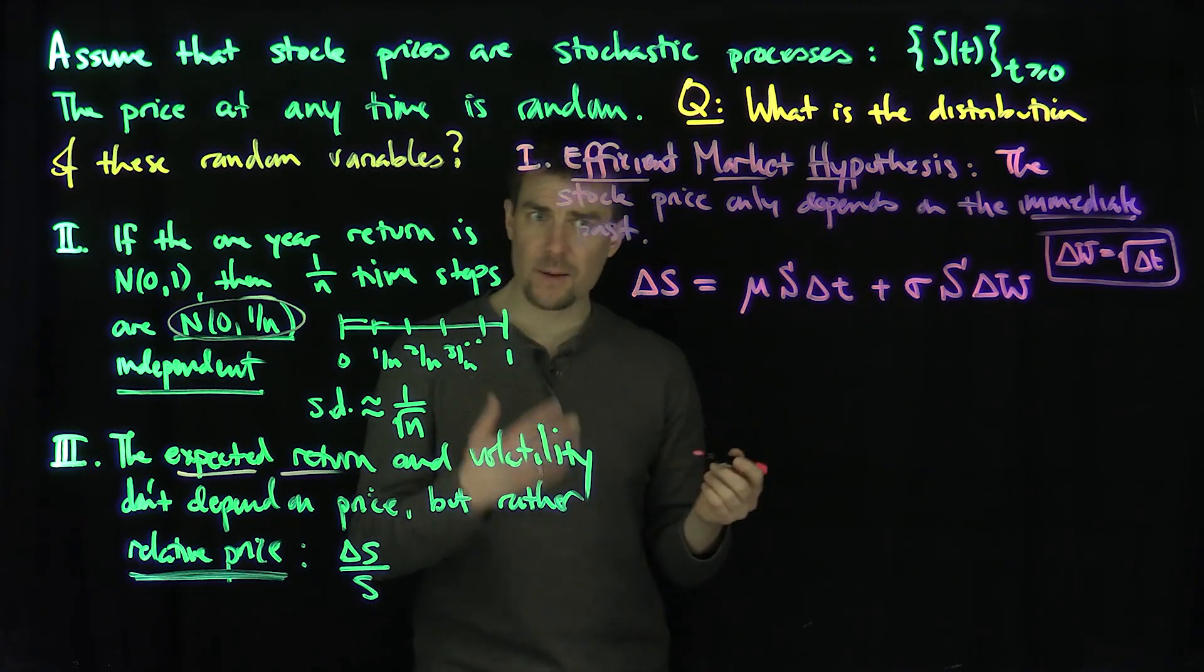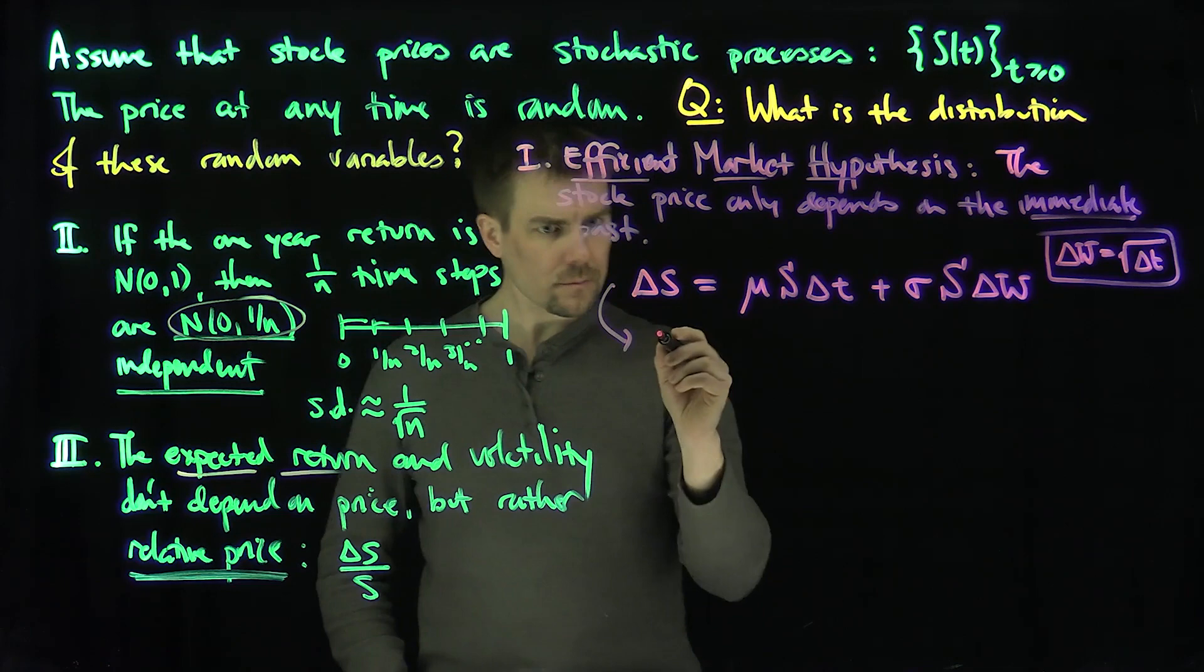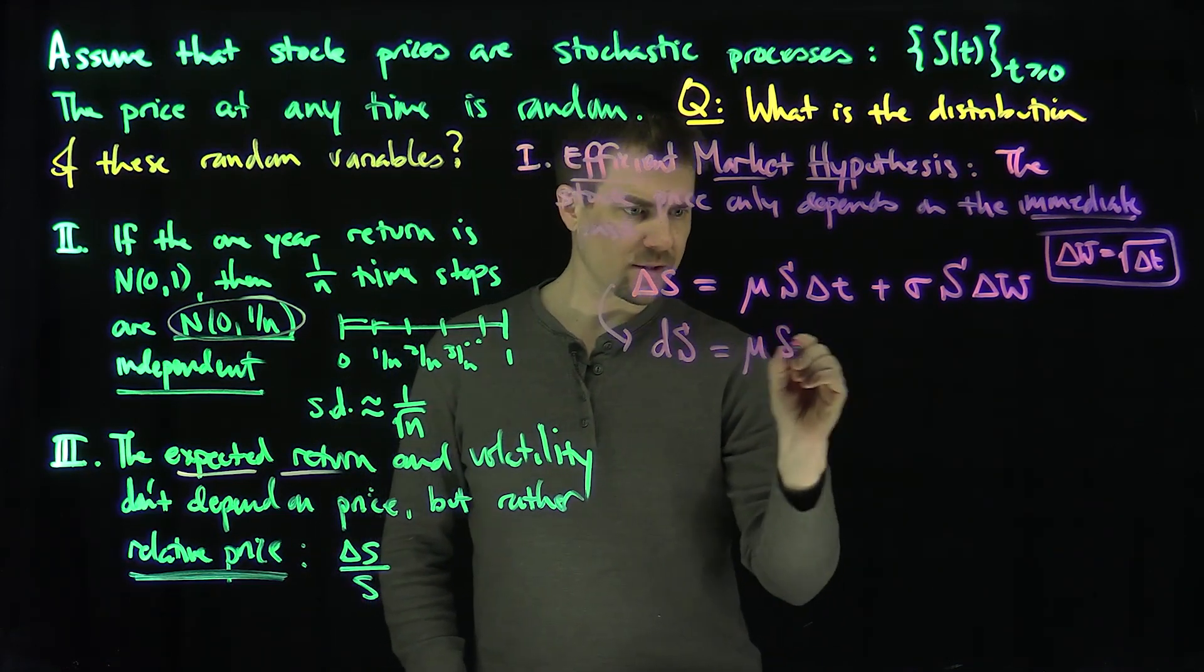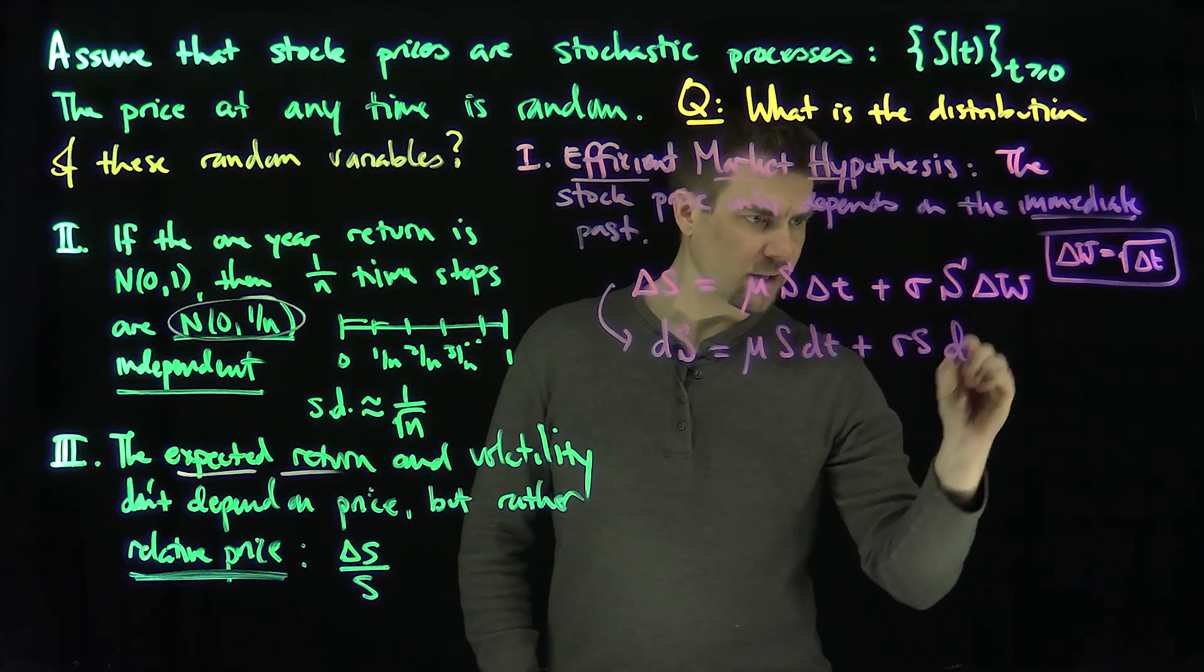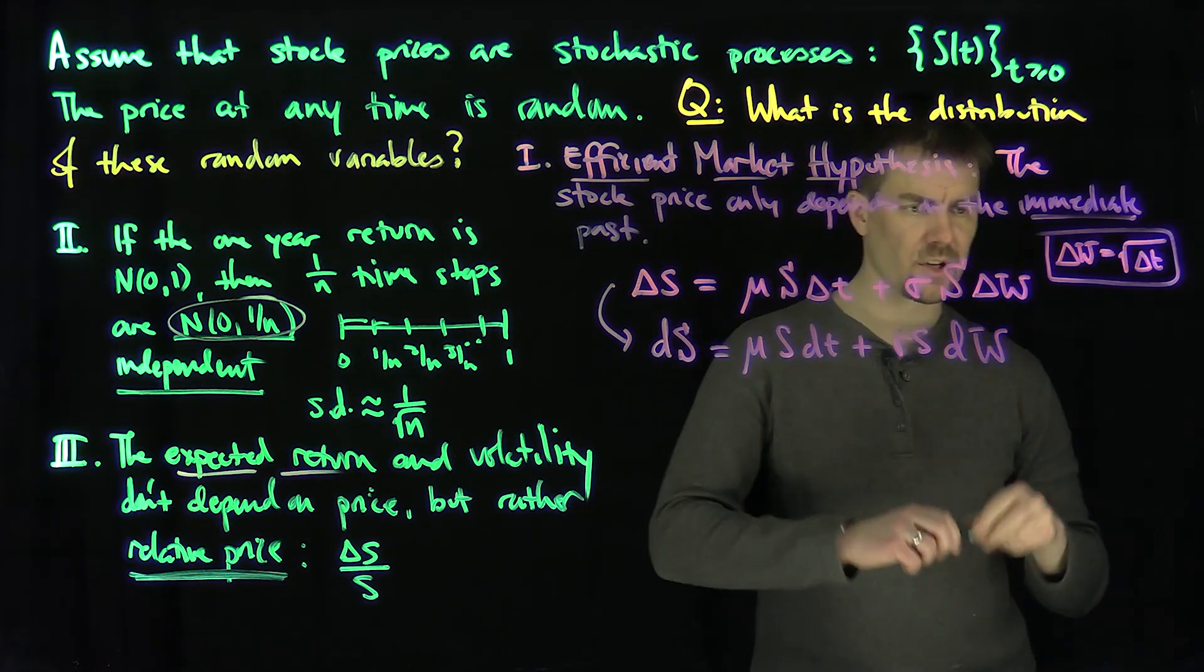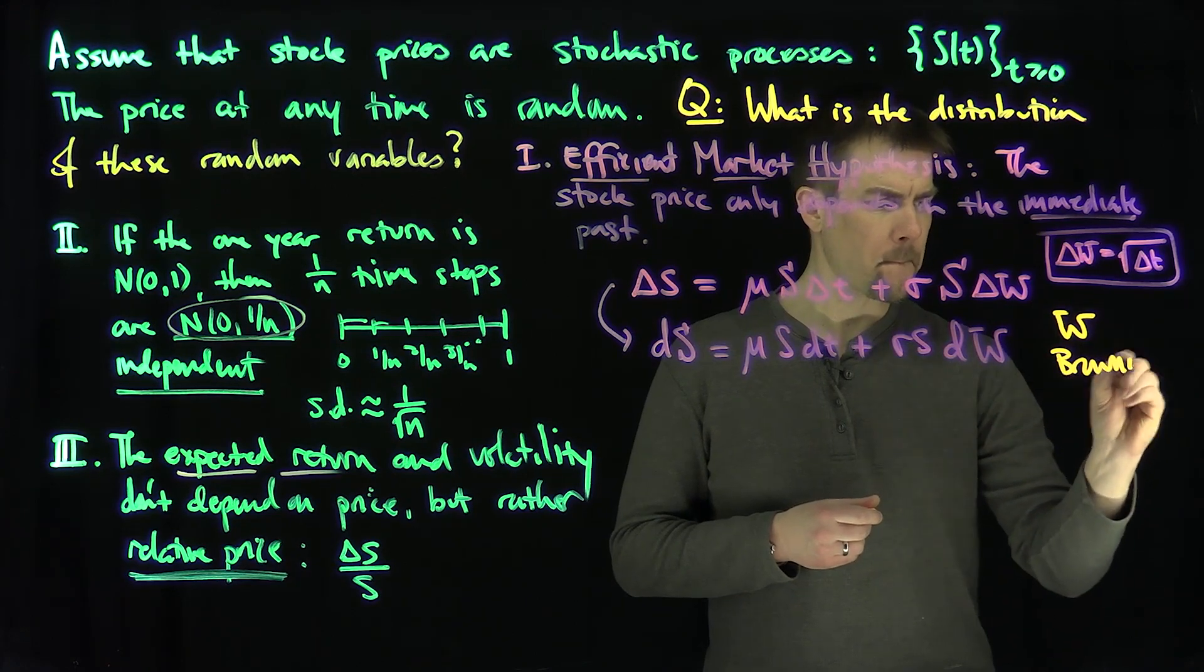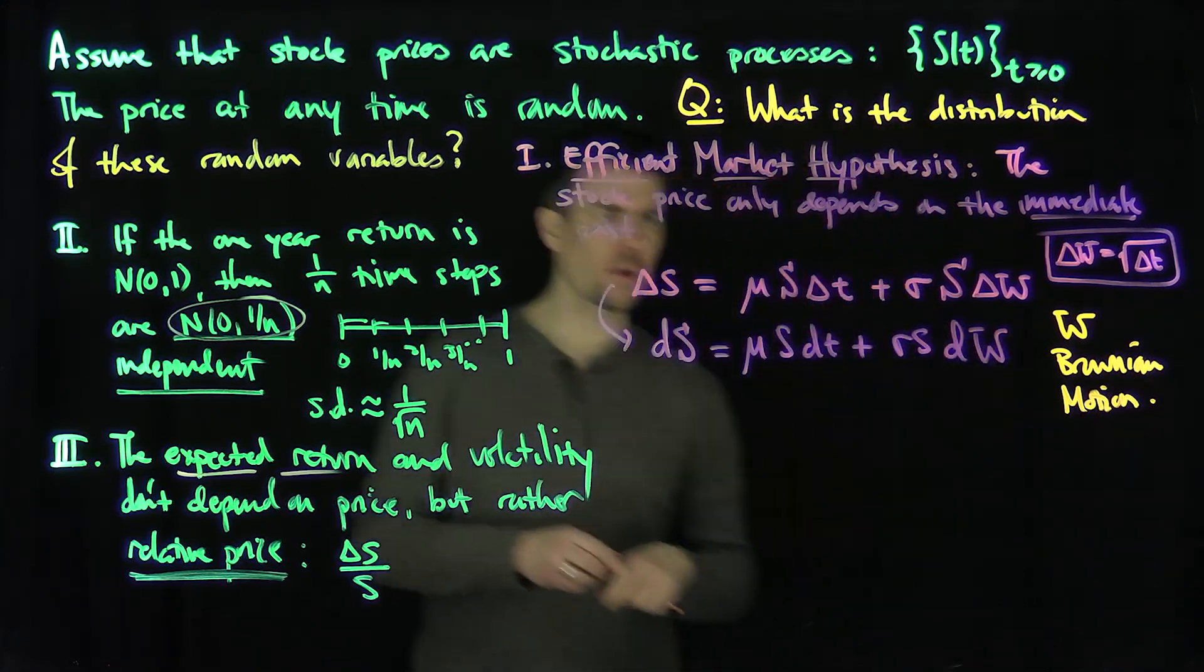In the continuous time limit, these things are going to turn into dS equals mu S dt plus sigma S dW. And this dW is the differential of Brownian motion. So W is Brownian motion.